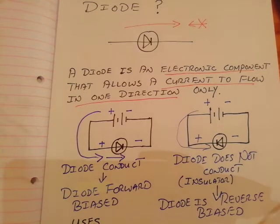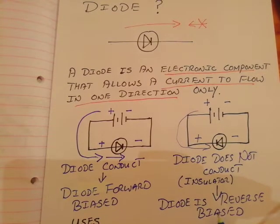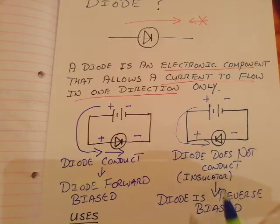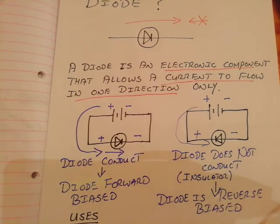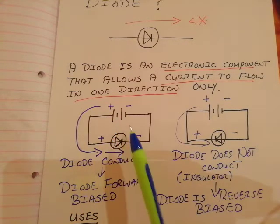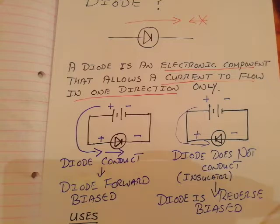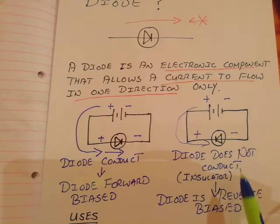If you're asked in an exam what 'reverse biased' means: it means the diode is connected up so it will not conduct the current. So a diode is like a one-way street for electric current. If you connect it one way, it's forward biased and conducts. Connect it the other way, it's reverse biased and doesn't conduct.